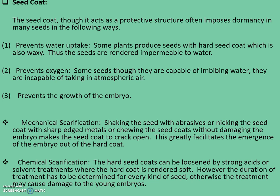In all these cases, the embryos are normal and do not possess any growth-inhibiting factors, but growth is prevented by the hard seed coat, which either prevents entry of water or oxygen, or does not crack to allow emergence of the growing embryo. The only mechanism to induce germination is to break and weaken the seed coat so the seed can take up water and oxygen and allow the embryo to emerge. The method used is mechanical scarification — shaking the seed with abrasives, nicking the seed coat with sharp-edged metals, or abrading the seed coat without damaging the embryo — which causes the seed coat to crack open, greatly facilitating embryo emergence.